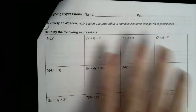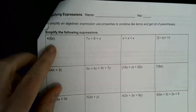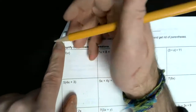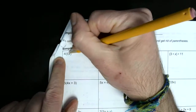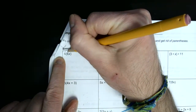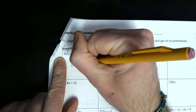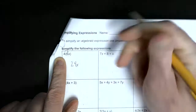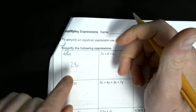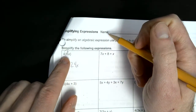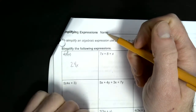We're just going to go through and simplify each one of these. We'll start with this one — it says four groups of 6x. We can actually use the distributive property for this. There's only one term in the parentheses, but if you multiply 4 times 6x, you would just get 24x. That's using the distributive property — it's also showing that four groups of 6x equals 24x.